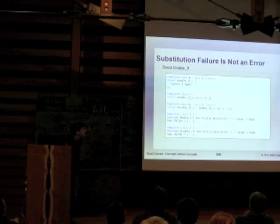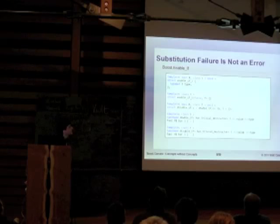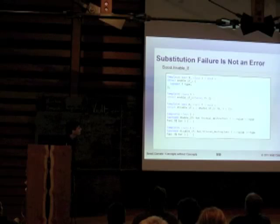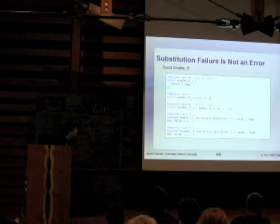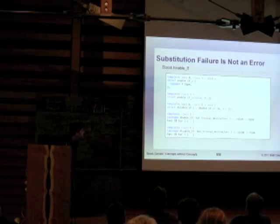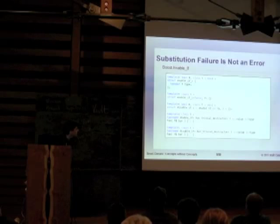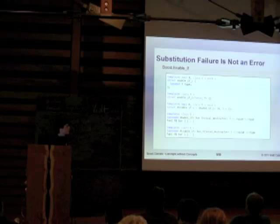Boost has a little facility called enable_if, which exploits this concept: it takes a Boolean condition, and depending on whether that condition is satisfied, it defines a nested type. If it's not defined, there's no type at all. We use that with function definitions or type template definitions in order to enable and disable particular overloads depending on whether they satisfy a given condition. For instance, enabling the first overload if there's a trivial destructor for the type you're passing, and disabling it if there's not — useful for optimizing code based on type traits.